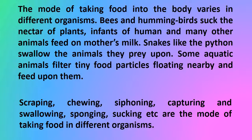Bees and hummingbirds suck the nectar of plants. Infants of humans and many other animals feed on mother's milk. Snakes like the python swallow the animals they prey upon. Some aquatic animals filter tiny food particles floating nearby and feed upon them. There are many modes of taking food: scraping, chewing, siphoning, capturing and then swallowing, sponging, and sucking.